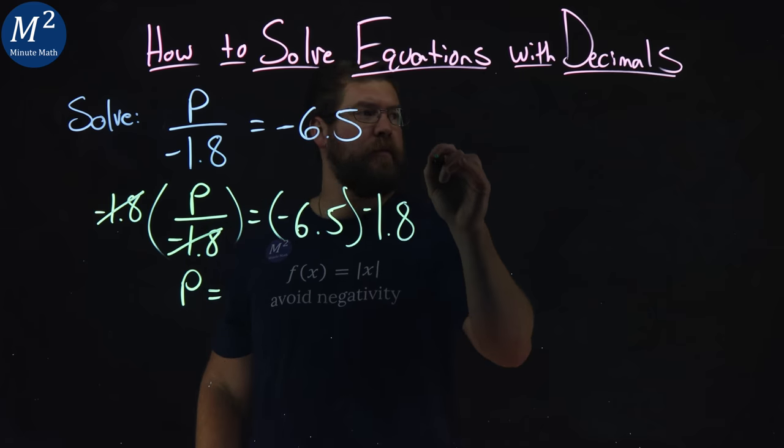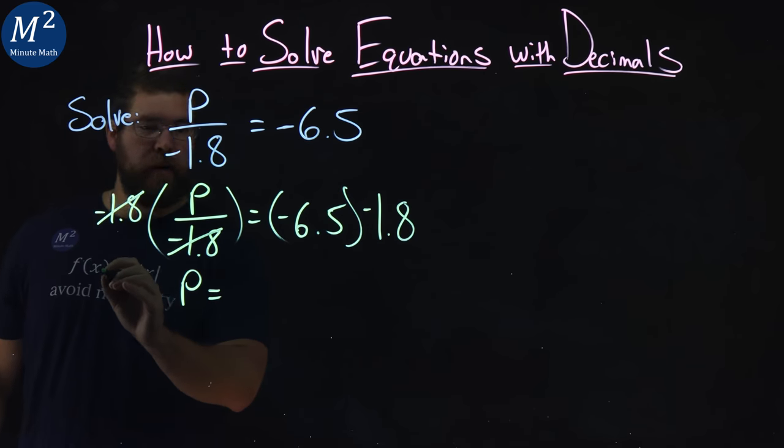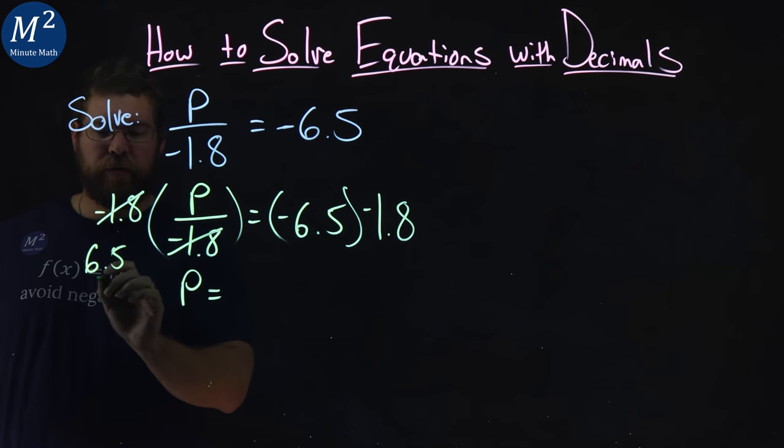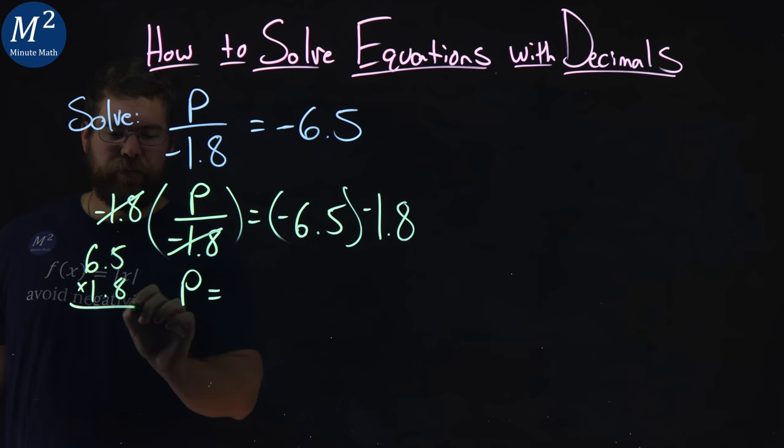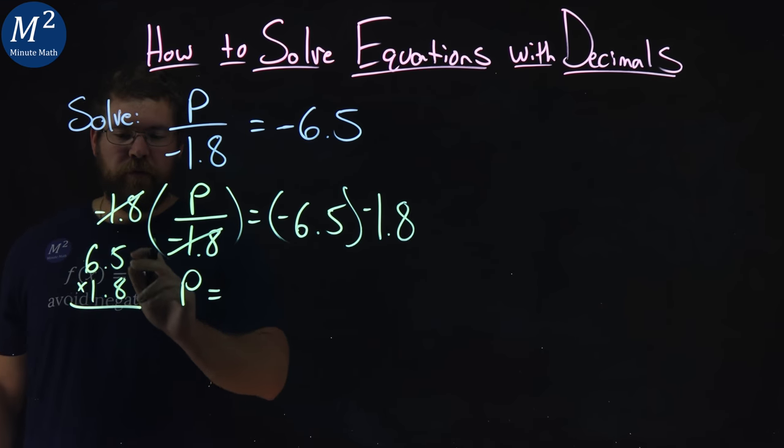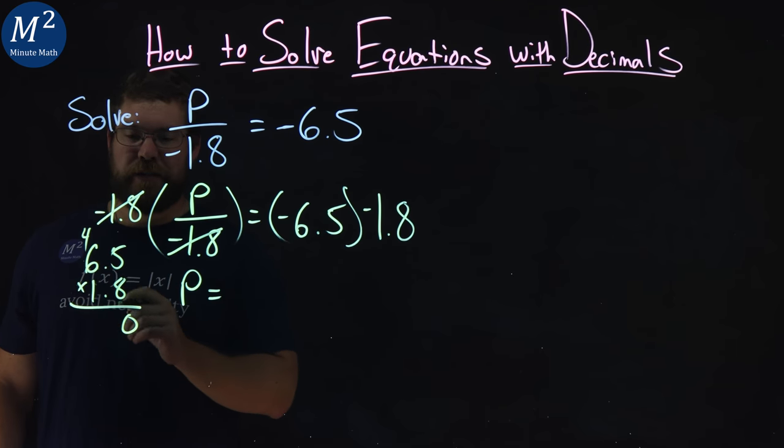So let's do some multiplication here if I have some room. I'll do it right here. We have 6.5 times 1.8. Well, 8 times 5 is 40, 0 carry the 4. And 8 times 6 is 48, plus 4 is 52.